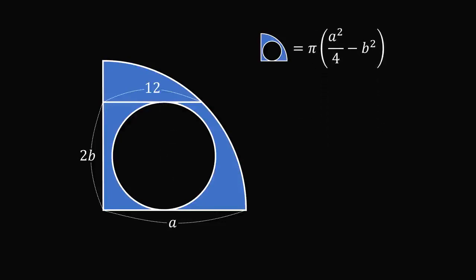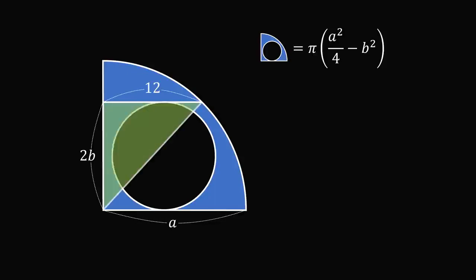It remains to solve for a squared over 4 minus b squared. To do that, construct a radius of the quarter circle to the endpoint of the line segment. This will have a length equal to a. We now have a right triangle where the hypotenuse is equal to a, and its legs are equal to 2b and 12.